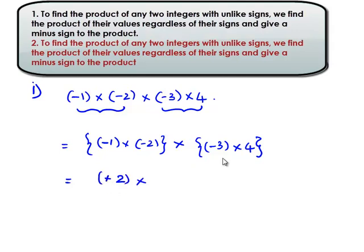To find the product of negative 3 and 4, first we multiply their values regardless of their signs. That is 3 into 4 gives 12. When we multiply two different signs, we always get a negative sign — that is minus 12.